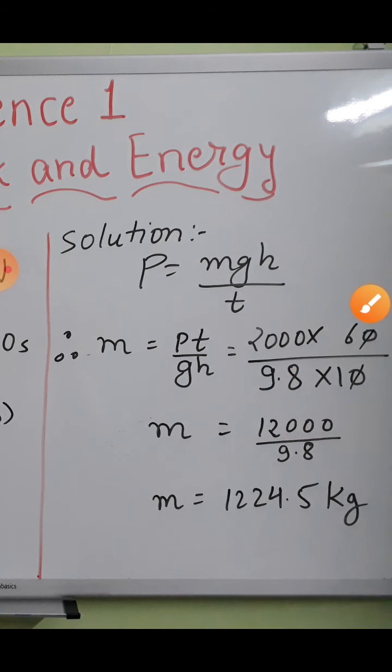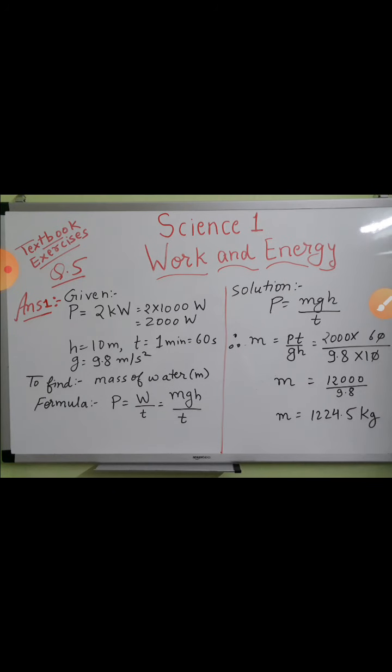At last you can write in sentence what is asked: how much water will the pump lift every minute to a height of 10 meter? You can write the answer: the pump will lift 1224.5 kg of water every minute to a height of 10 meter. This is all about our question number five, the first one.